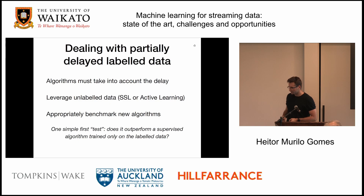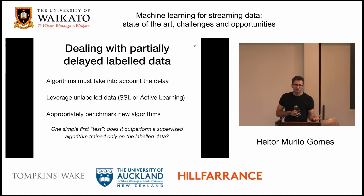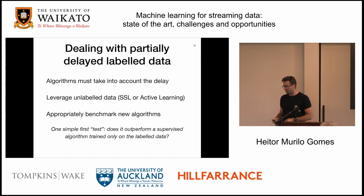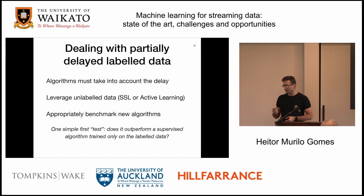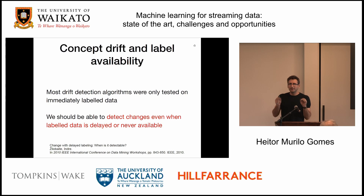Dealing with delayed-labeled data, you have to take into account the delay and how you're going to handle it — it's still an open research challenge, that's why this is called Challenges. You can leverage the unlabeled data using semi-supervised learning or active learning, although active learning is a bit tricky for streaming data because you might not have the feedback in time if it relies on a person. To appropriately benchmark these algorithms is also important: what if I don't use the unlabeled data, just train on the labeled data — what do I get? Ideally we should be able to detect changes in the data even without labeled data, covering unsupervised and delayed-labeled cases.